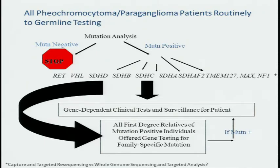I showed this yesterday but forgot two genes, so I've slipped in Max and NF1. There's a little asterisk because Peter Cobb reminded me to think about whether we do targeted resequencing versus whole genome sequencing and targeted analysis, because each of these genes has different risk factors and different phenotypes which can be surveilled for. In the case of RET, the standard of care is prophylactic thyroidectomy.